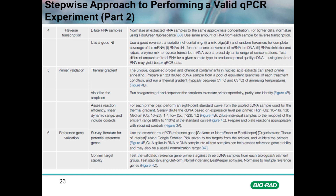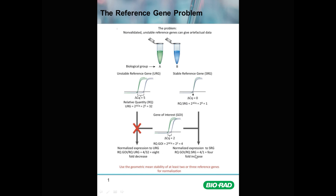The bottom line is that for any given study, a panel of reference genes should always be tested against all of the treatment groups in the experiment — using two or three biological replicates from each treatment or biological group, including control. A full study cohort of samples is required to assure that the reference genes are stable between all treatment groups. The most stable reference genes can then be used confidently to avoid publishing artifactual data consequent to reference gene regulation between treatments.